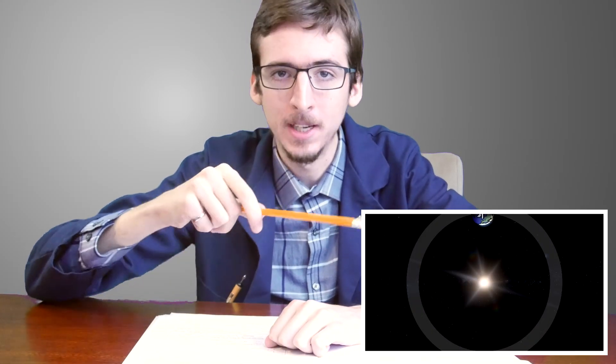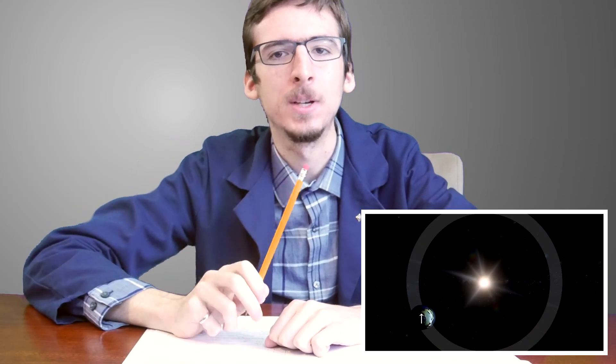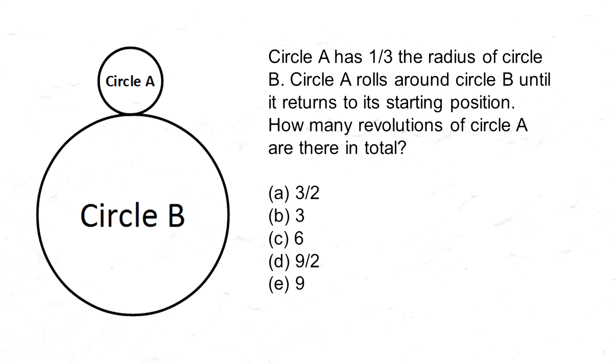Well slow down there hotshot, because remember that circle A also orbits around circle B, just like the Earth orbiting around the Sun. That means that we need to add the extra rotation of the orbit. The answer is four.